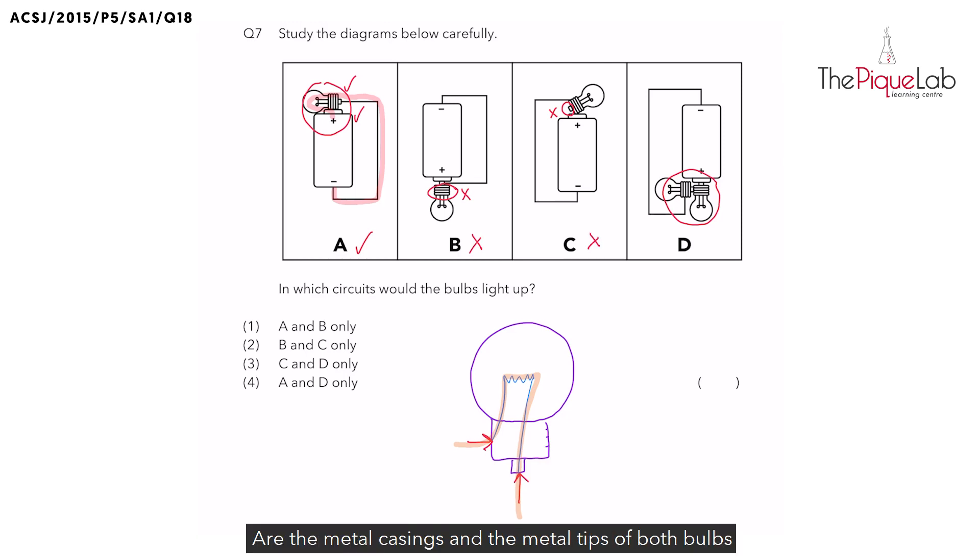Are the metal casings and metal tips of both bulbs connected to the circuit? Yes, they are. Can electricity flow through the filaments of both bulbs? Let's check. Yes, they can. Will both bulbs light up? Yes, they will.